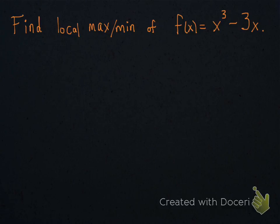The process you just saw was a quick recap of how to find local max and min of a function. I'm going to walk you through how to do it with this function: f of x is x cubed minus 3x.